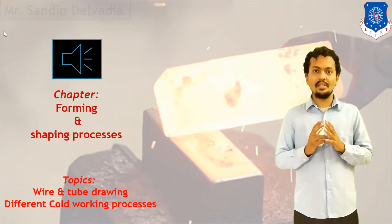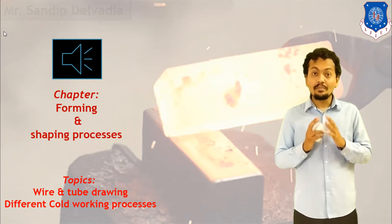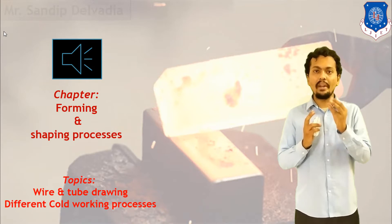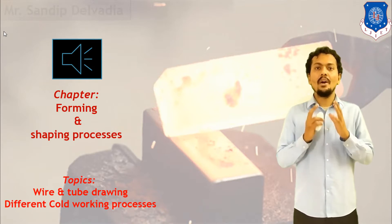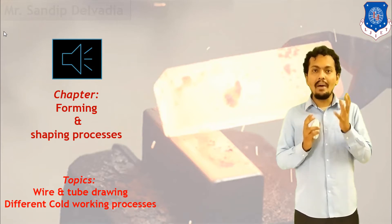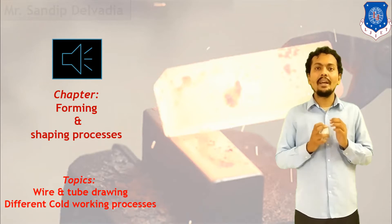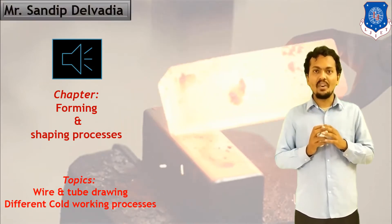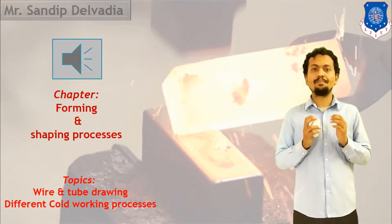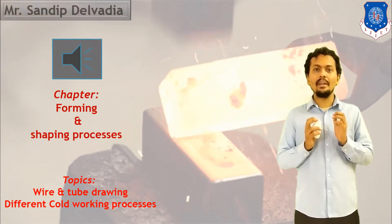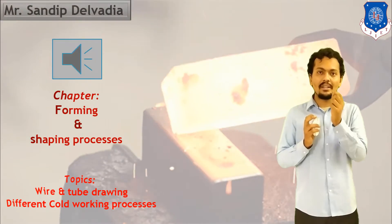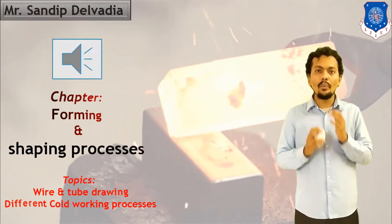Shaping and forming processes are simple processes in which only shape will change. With help of pressure and compressive forces, we can change the shape of any metal. We have discussed the concept of hot working and cold working. In hot working, we deal above recrystallization temperature, and in cold working, we work at room temperature. We have discussed the rolling process, so let us start with different cold working processes.